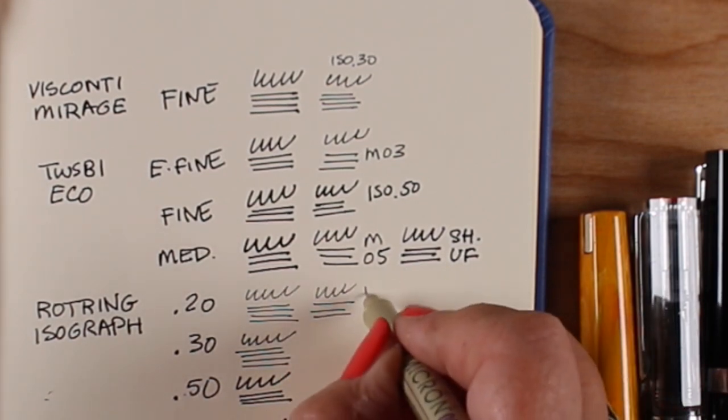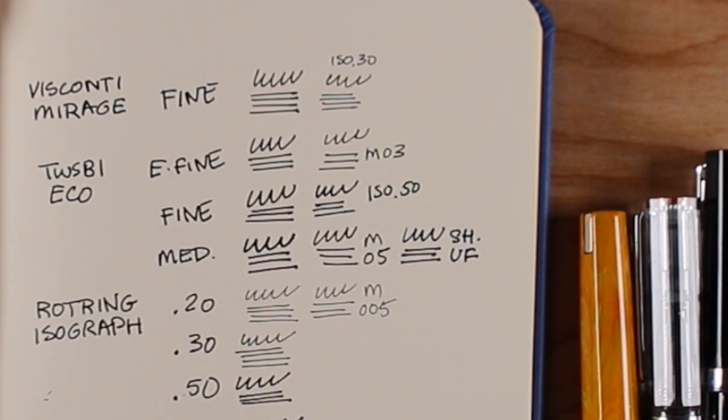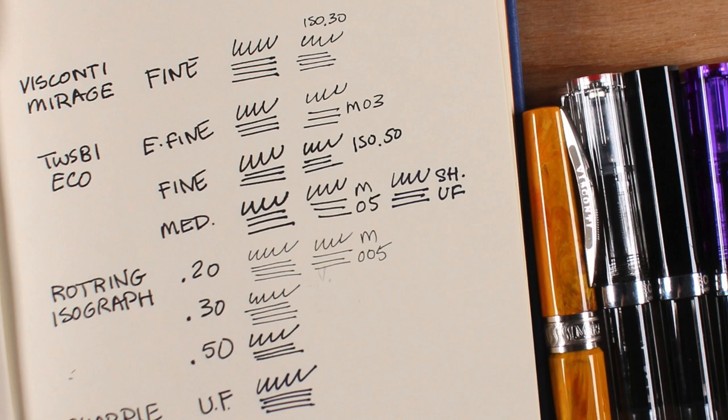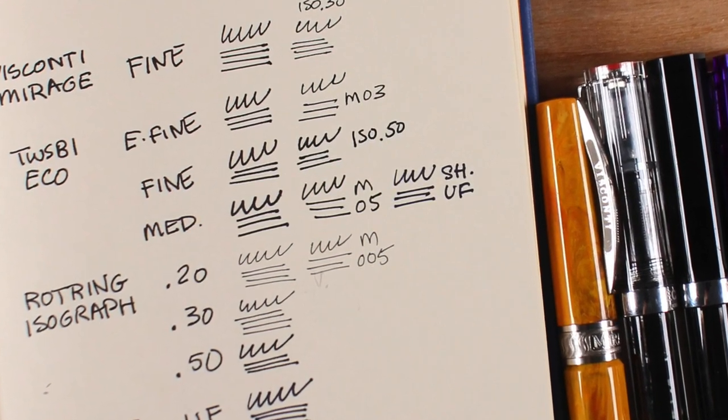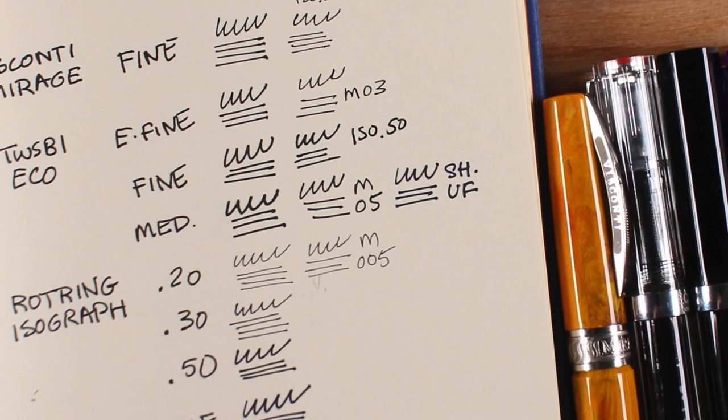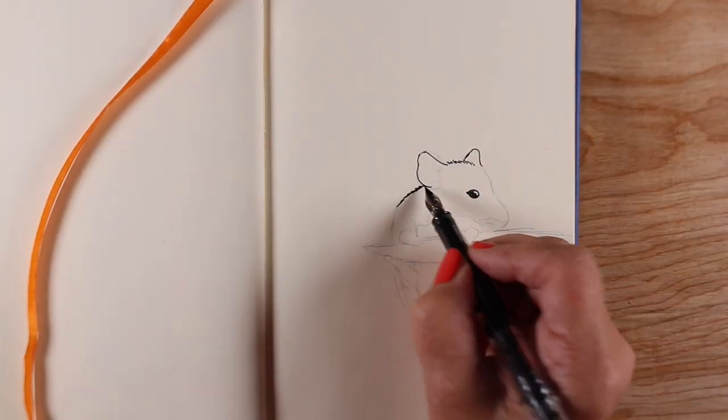But the Rotring Isograph, if you like that pen but you really don't want to invest in crazy pens like that, you can get a micron in the 005. That's about the same width. And the micron 005, I don't know if you can get it single. I'll look it up and see if I can find a link for you in the supplies. But you can get it in a set. I know that.